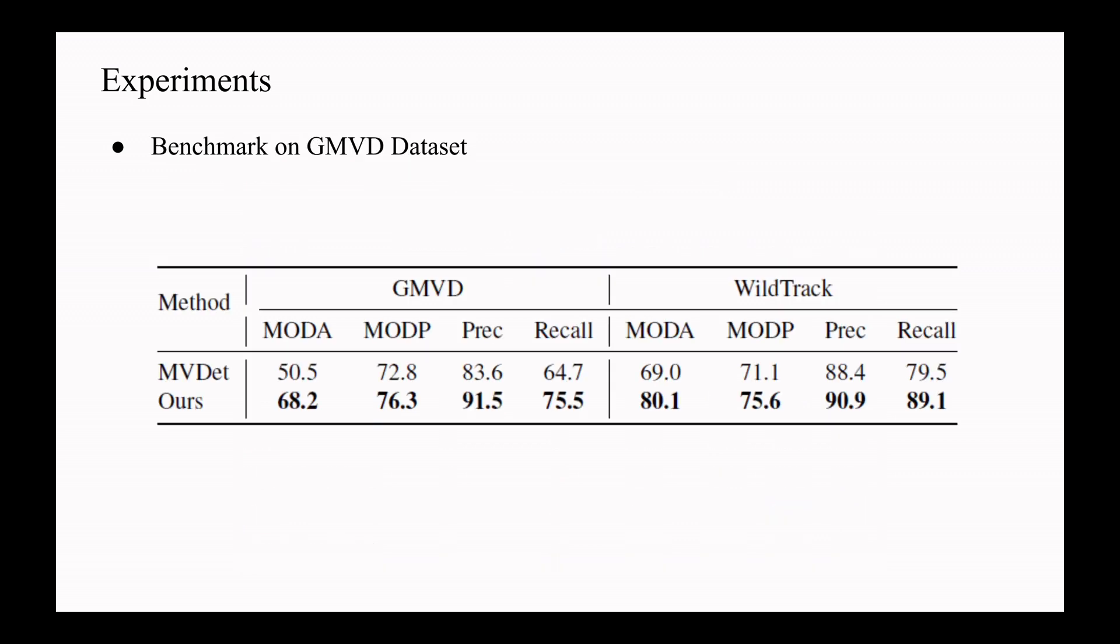We provide benchmarking results on our curated GMVD dataset. None of the existing methods can be trained on GMVD dataset because by design they can only be trained on a fixed set of cameras. The MVDET model was easily adaptable to be trained on GMVD dataset by duplicating frames. The first column shows performance metrics when tested on GMVD test set. The second column shows performance metrics of synthetic to real adaptation when tested on real dataset WildTrack. This highlights the difficulty of GMVD test set which has distinct train and test splits as compared to WildTrack and MultiviewX.